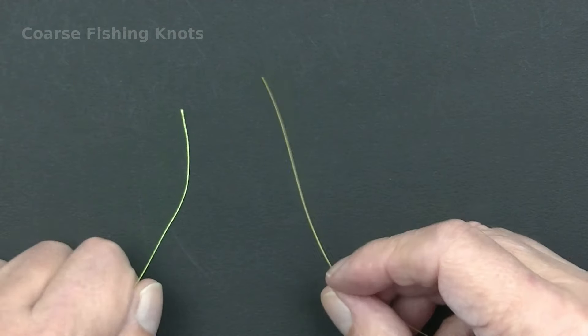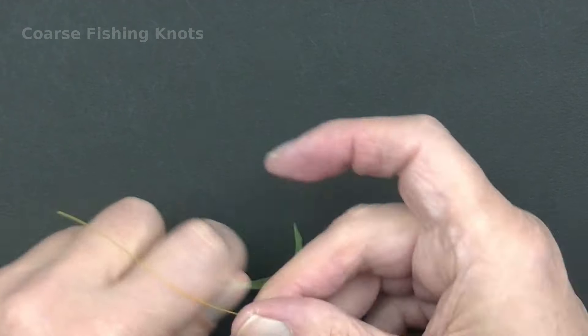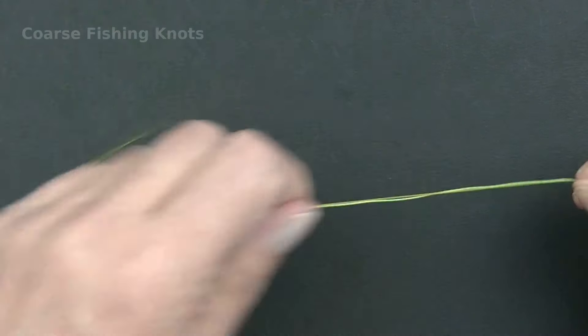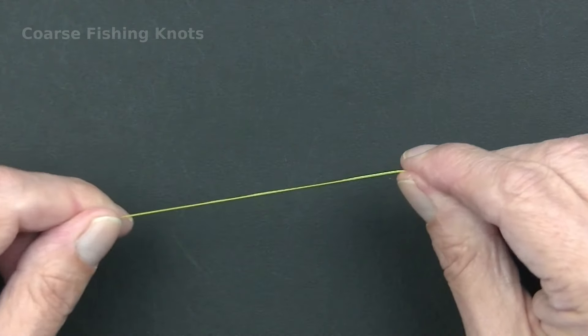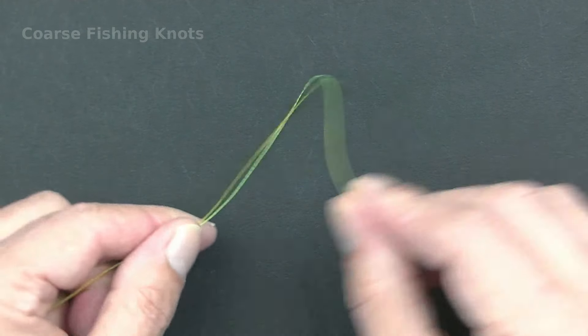How to tie the Easy Braid to Mono Knot: Hold the braid and nylon line parallel. Form a large loop with the two lines.